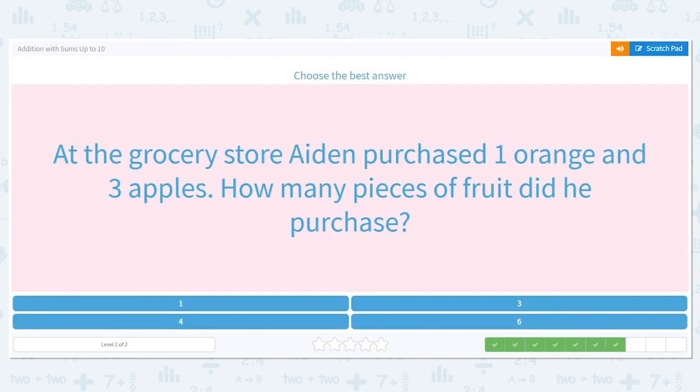At the grocery store, Aiden purchased one orange and three apples. How many pieces of fruit did he purchase?